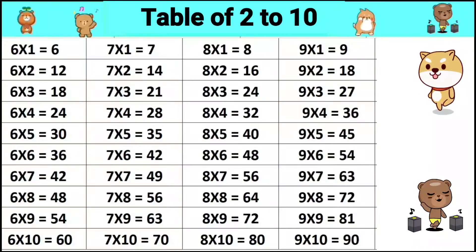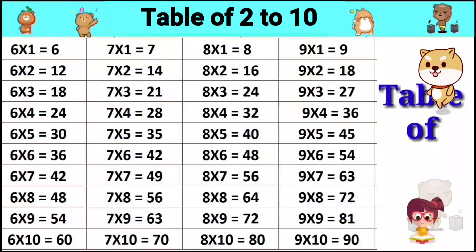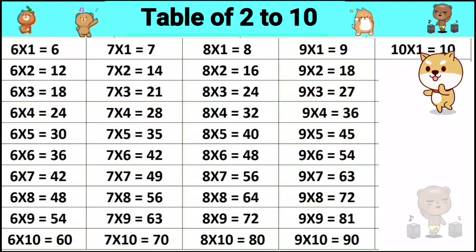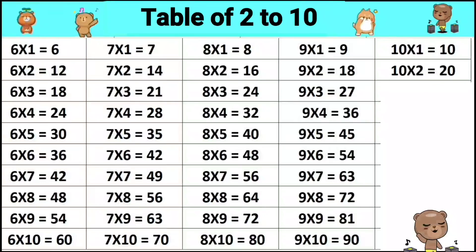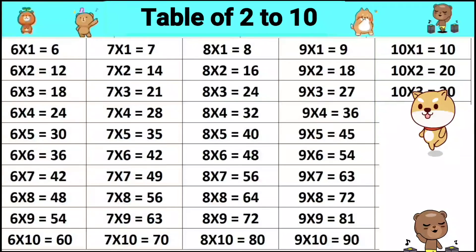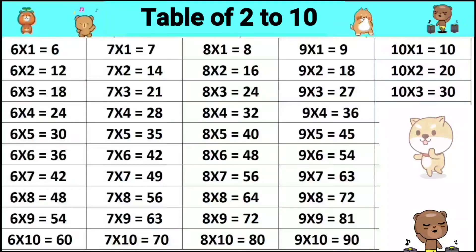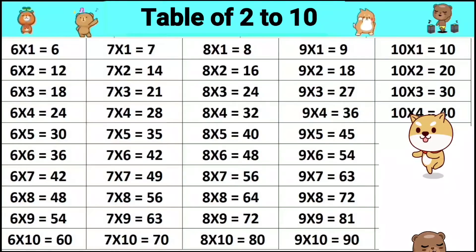Table of 10. 10 ones are 10, 10 twos are 20, 10 threes are 30, 10 fours are 40.